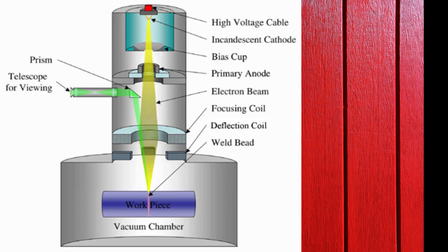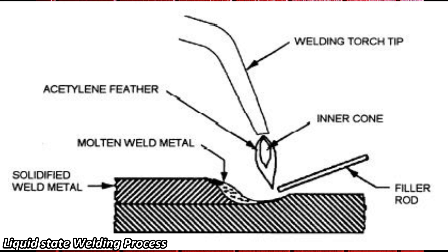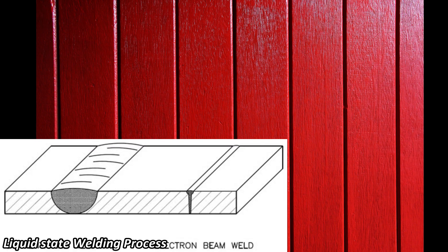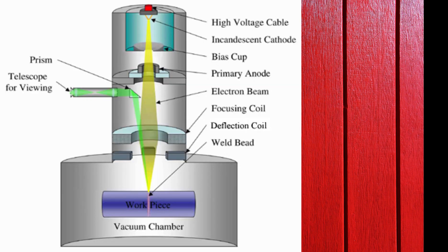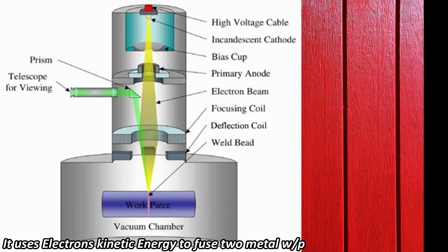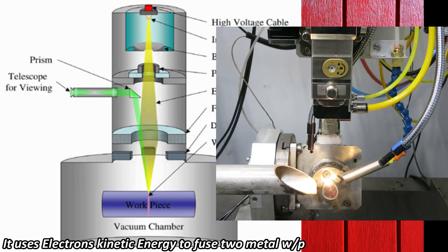Electron beam welding is a liquid state welding process. Liquid state welding are those welding processes in which the metal to metal joint forms in liquid or molten state. This is also classified as a new welding process because it uses electron's kinetic energy to fuse two metal workpieces.